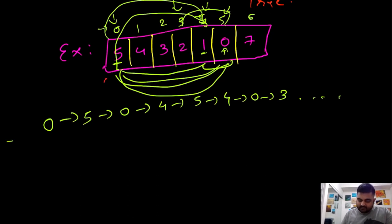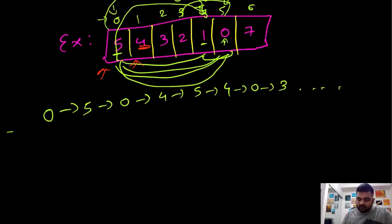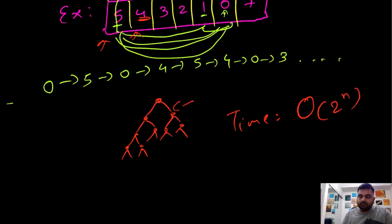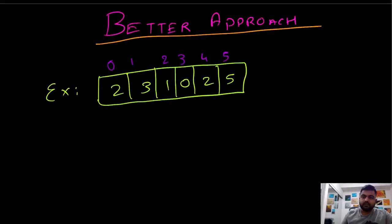Looking at the time complexity: at any single position we have two possibilities — whether we keep that value in our current path or we don't. If we build a decision tree, it keeps growing with every single value added. At every single position we are making two choices, so the time complexity is O(2^n) — a very bad exponential time complexity that we cannot allow.